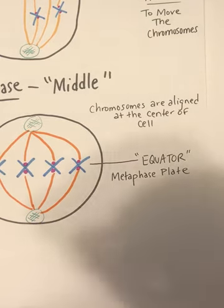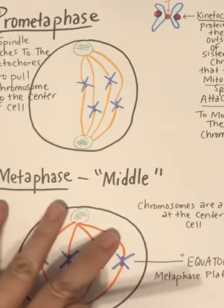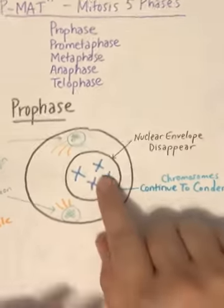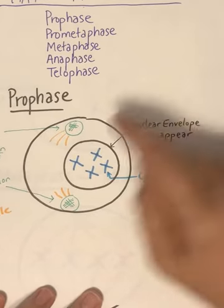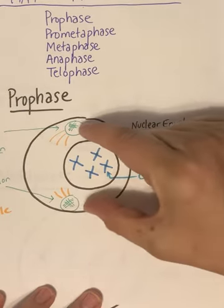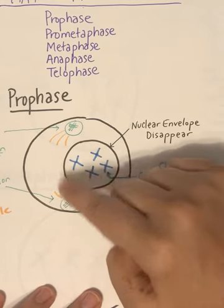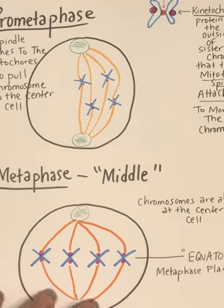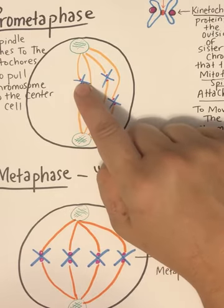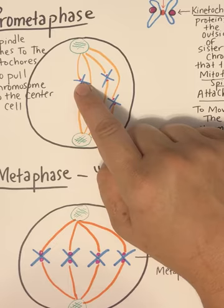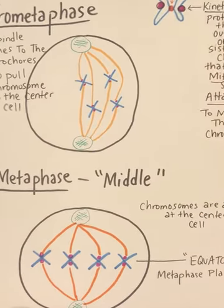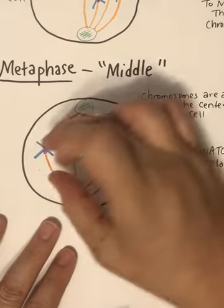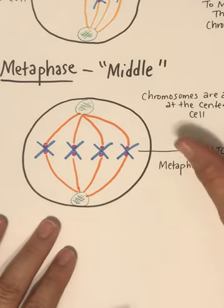So in prophase we get rid of the nuclear envelope; your centrosomes align on either pole and form the mitotic spindle. In prometaphase the mitotic spindles attach to the proteins called kinetochores and start pulling them toward the center. Now in metaphase the chromosomes are pulled to the very center. Metaphase means middle, so now we are on anaphase — remember P-MAT.